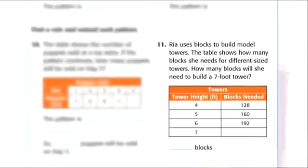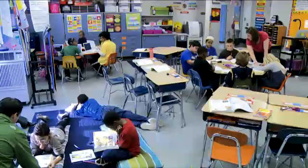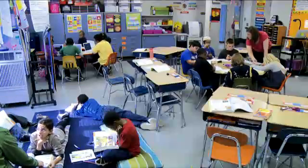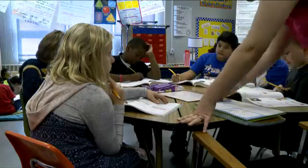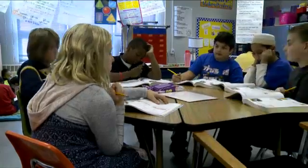I want you to look at problem number 11. Problem number 11 says Rhea used blocks to build model towers. The table shows how many blocks she needs for different sized towers. How many blocks will she need to build a seven foot tower? Find the pattern, talk it out, try and find the rule, and find the missing number. Talk it out amongst yourselves. Think out loud.